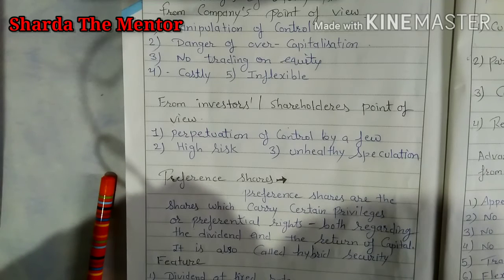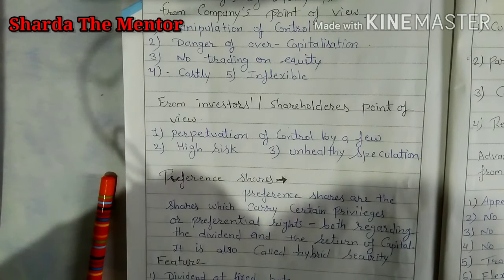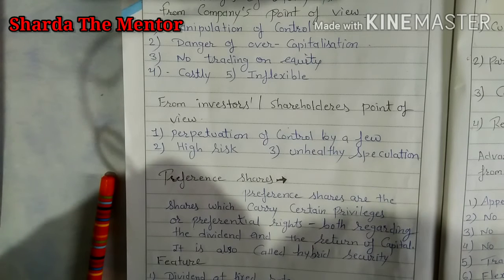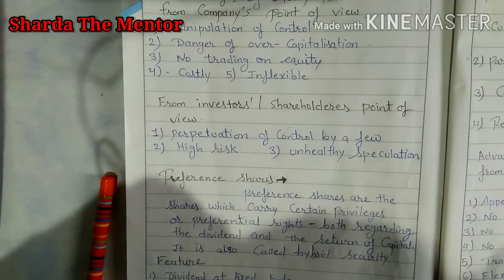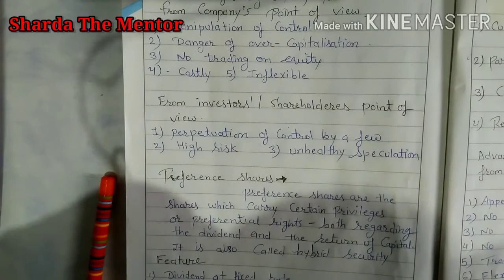Next is inflexibility. Equity shares cannot be redeemed; preference shares, on the other hand, can be wound up in a particular period of time. So equity shares are considered inflexible. Whenever a company has a surplus amount, it can redeem preference shares, but that is not possible with equity shares. That security is considered inflexible because the company cannot redeem it whenever they have excess profit.